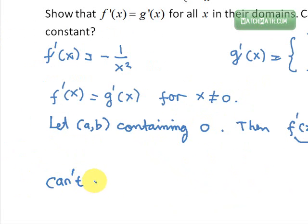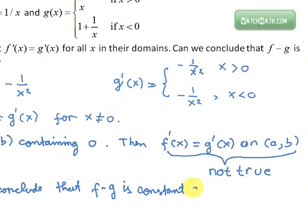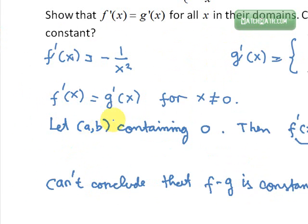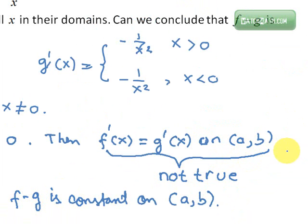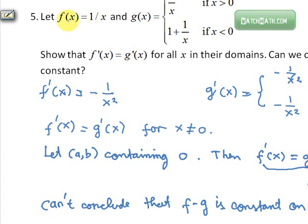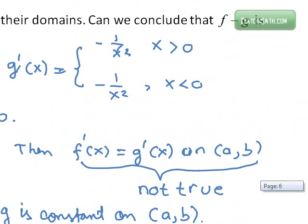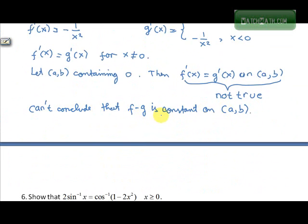So we cannot conclude that f minus g is constant on the interval (a, b). Meanwhile, in the problem we want to conclude that f minus g is constant everywhere, but for any open interval containing zero, f minus g is possibly not constant on that interval. One more thing: we can manually check that f minus g is not constant.